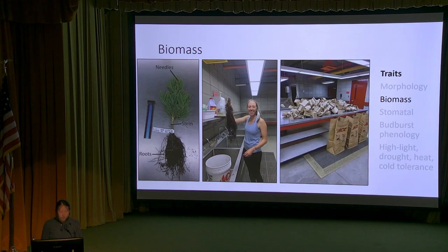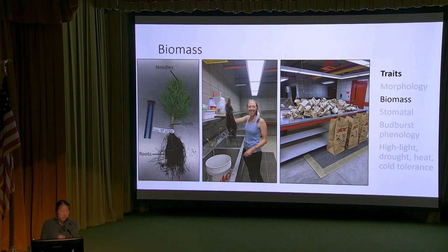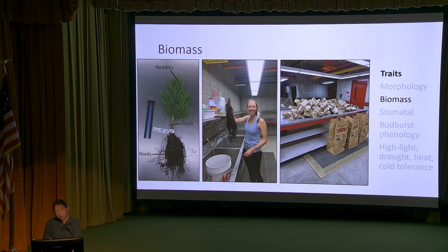We also measured biomass - total biomass of each seedling and the biomass of roots, stems, and needles separately. We put them in paper bags, dried them in a drying oven, and weighed them for dry mass. From these measurements we can assess how each species allocates biomass: more to needles may indicate better photosynthesis and faster growth, while more biomass to roots may indicate greater drought resistance.